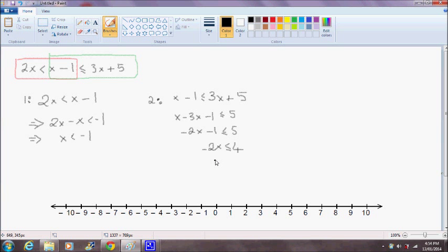I'm going to divide both sides by negative 2. When I divide by negative 2, remember I have to reverse the direction of the inequality. So this will give me x is greater than or equal to 4 divided by negative 2, so x is greater than or equal to negative 2.